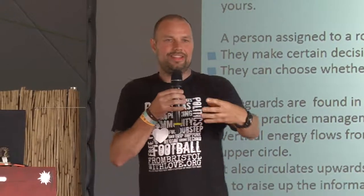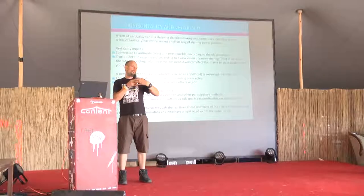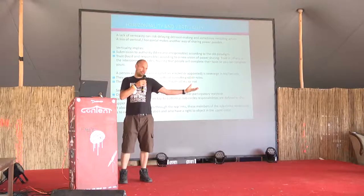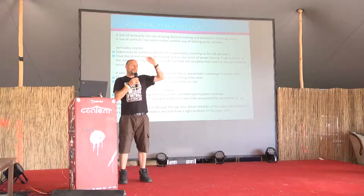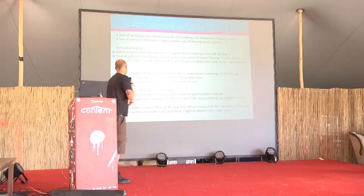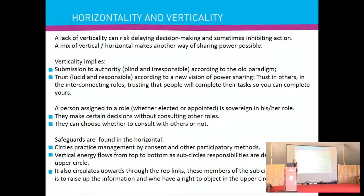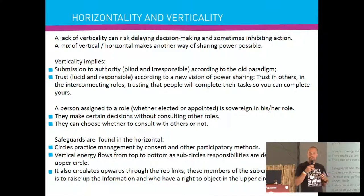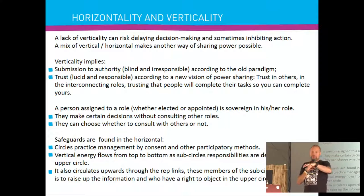Being sovereign in a role means you can do whatever you see fit in order to deliver it. For example, if you're given all the marketing for part of the organization, you can do that in whatever way you want. They can also make certain decisions without consulting other roles, and can choose whether to consult or not — using what we call an advice process: you might speak to a knowledgeable friend, or call a meeting and get advice from the group on how to fulfill that role.